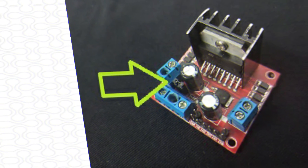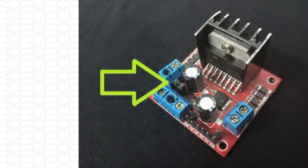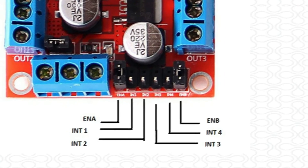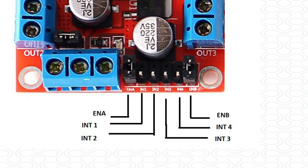In this port, we can use the 5 volt EN jumper pin. The name of this port is ENA. In this port, we can use the motor driver to control the speed.